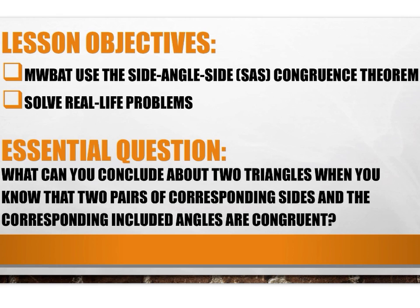Our lesson objectives: mathematicians will be able to use the side-angle-side, shortened to SAS, congruence theorem and solve real-life problems. Our essential question is: what can you conclude about two triangles when you know that two pairs of corresponding sides and the corresponding included angles are congruent?